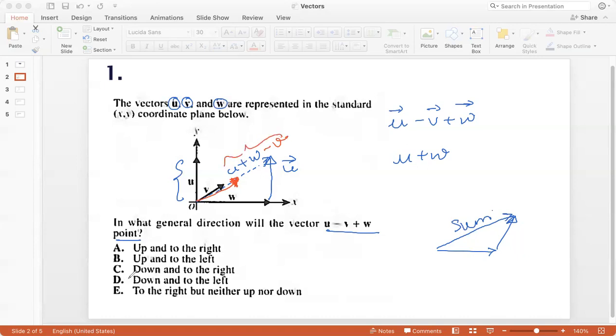So this is the final vector. And you can see that it points up and to the right. It is up and to the right. It's in the first quadrant. And so the answer is option A.